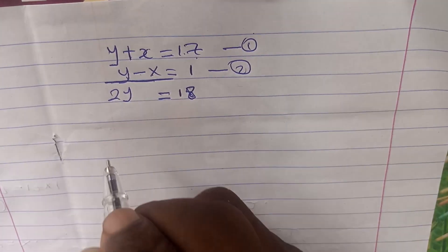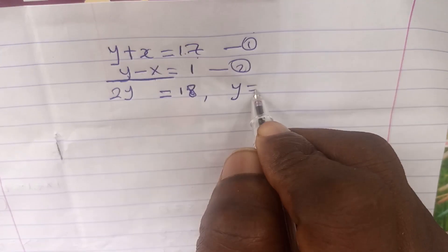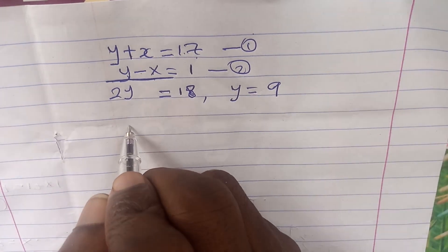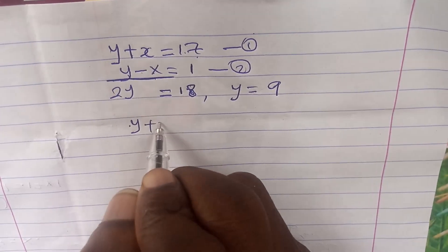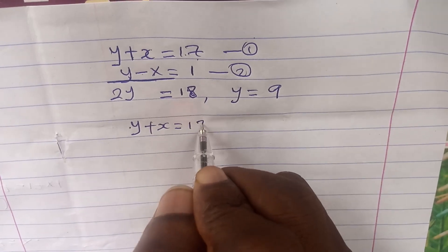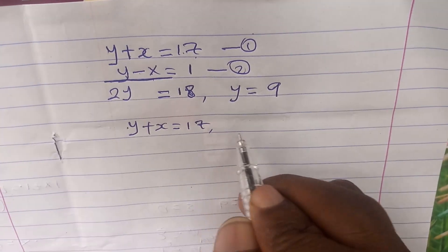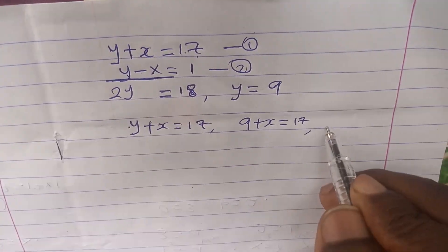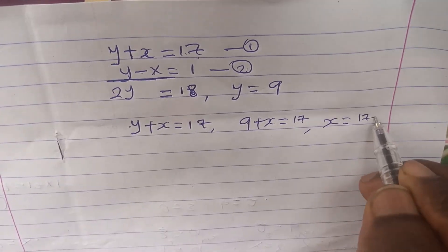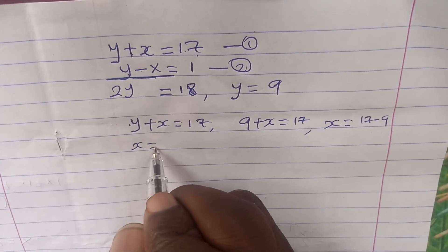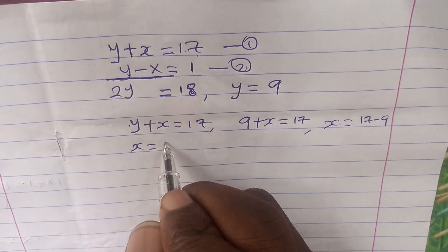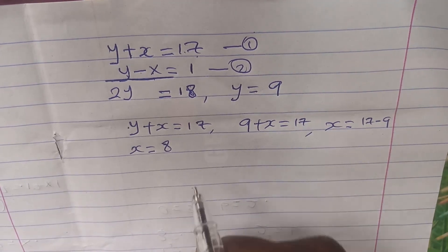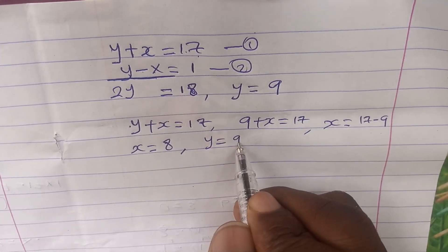We solve simultaneously using the elimination method. Adding the two equations: y plus y gives 2y, plus x minus x gives zero, and 17 plus 1 equals 18. So 2y equals 18, therefore y equals 9. To find x, pick equation one: y plus x equals 17. We know y is 9, so 9 plus x equals 17, therefore x equals 17 minus 9, which gives x equals 8. So x equals 8 and y equals 9.